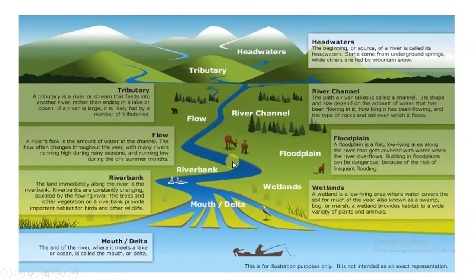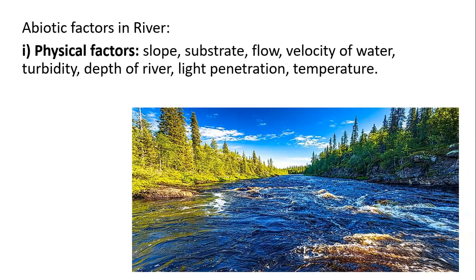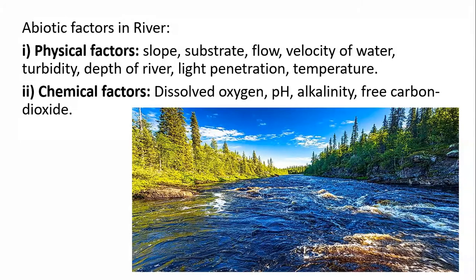In the river there are a number of abiotic factors — both physical and chemical. Physical factors include slope, substrate, flow velocity of water, turbidity, depth of the river, light penetration, and temperature. Chemical factors include dissolved oxygen, pH, alkalinity, and free carbon dioxide.